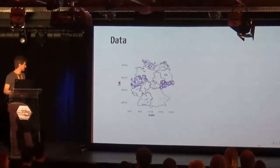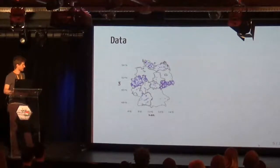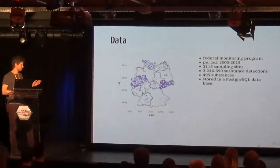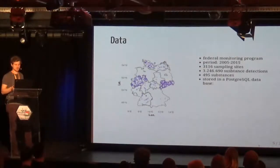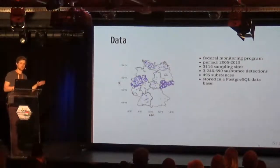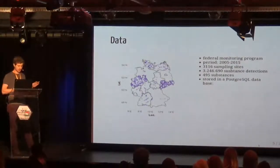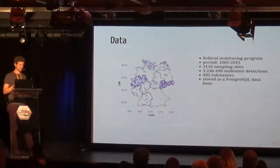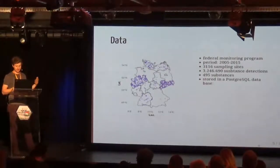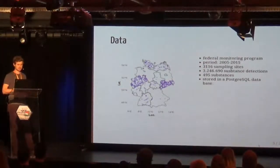Coming to the data, this is the governmental monitoring data we have from Germany. It's from federal monitoring programs, gathered and collected between 2005 and 2015. It covers roughly 3,000 sampling sites and about 3 million substance detections. It's not only pesticides — there's also a lot of other data inside, and together it covers about 500 different substances.